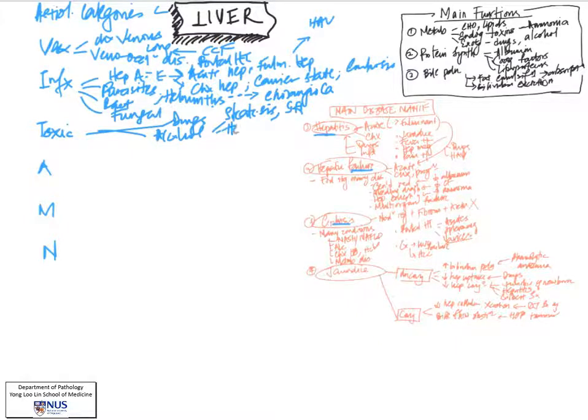Steatohepatitis is a more advanced stage of steatosis where there is both fatty change and damage to liver cells. It can give rise to alcoholic hepatitis and eventually cirrhosis and even hepatocellular carcinoma.